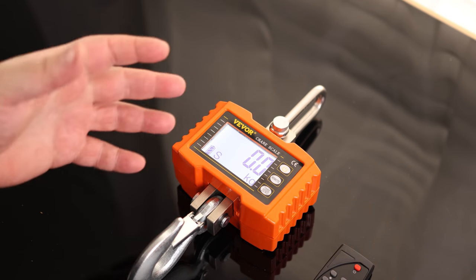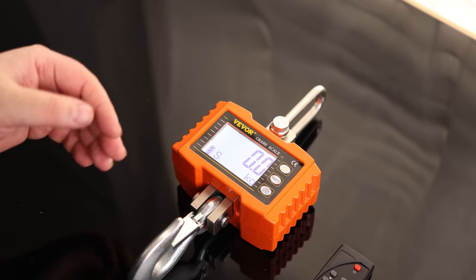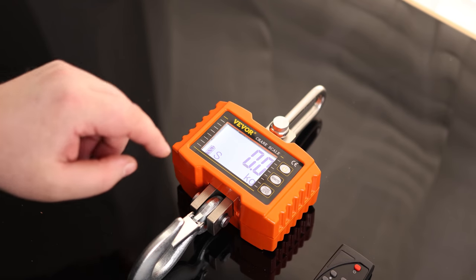So we've got the S, that means stable. So essentially, when you're lifting very heavy things, there's a chance that things can kind of spring and bounce up and down a little bit. So when that's finally solid, you can get an accurate reading. This is going to tell you when that reading is accurate.